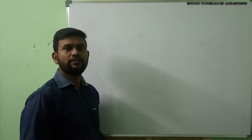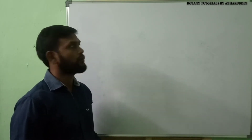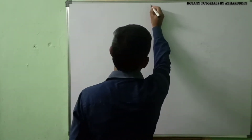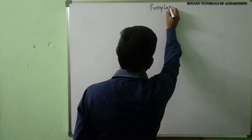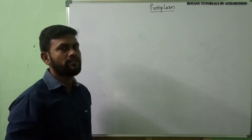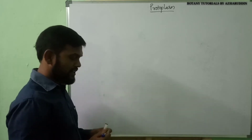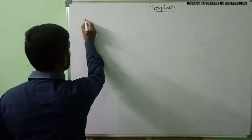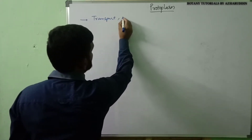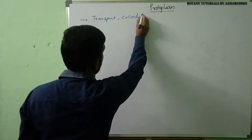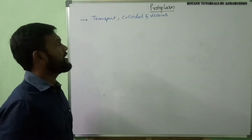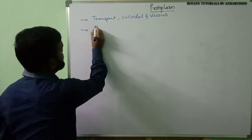Hello everyone. In the previous part we discussed about the structure of the cell. Today I am going to explain another topic: protoplasm. Protoplasm is present inside the plasma membrane. Protoplasm is a transparent, viscous, and colloidal substance.